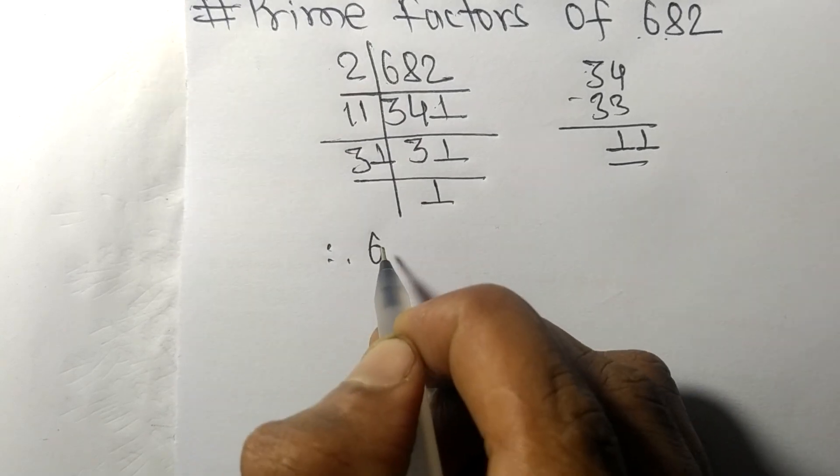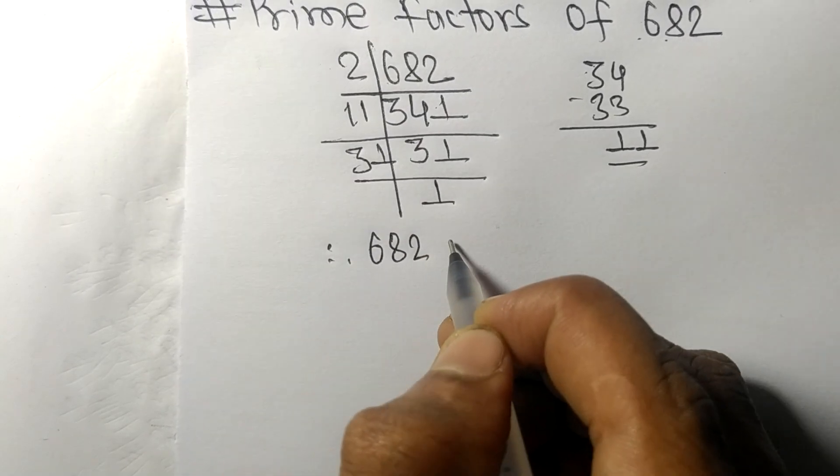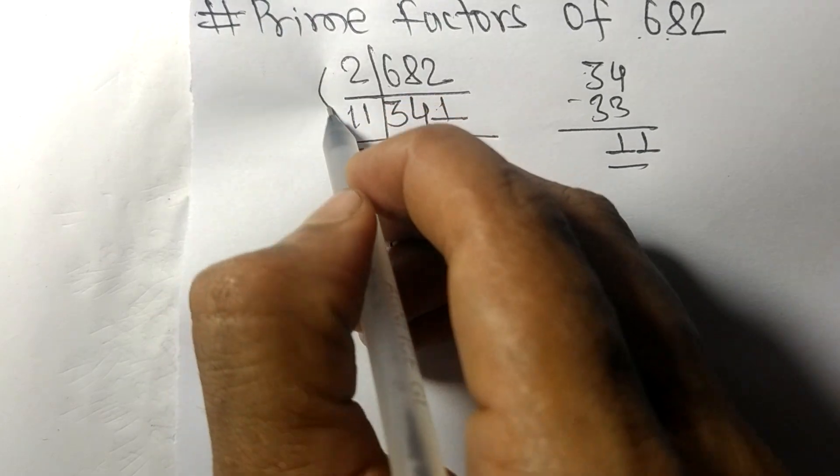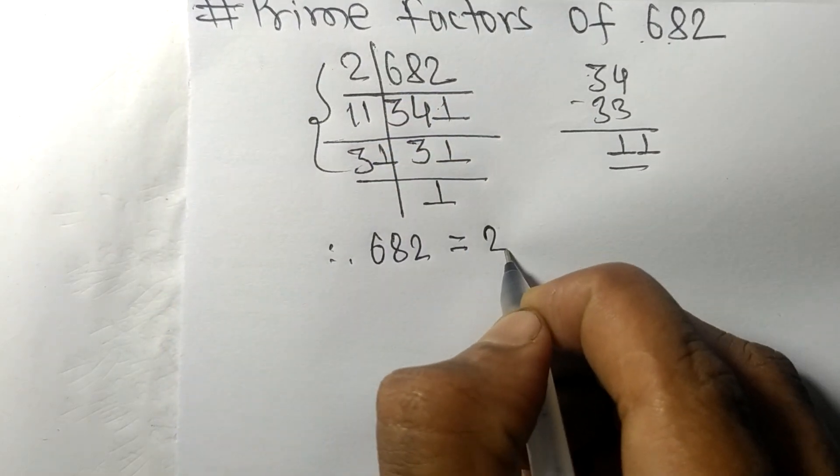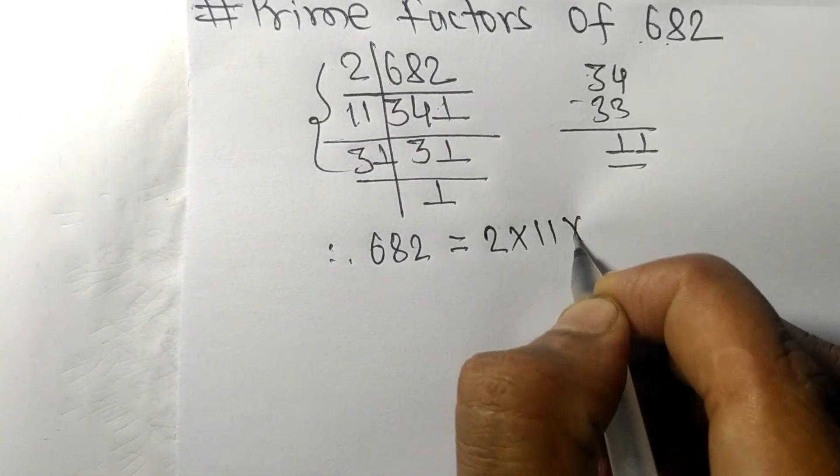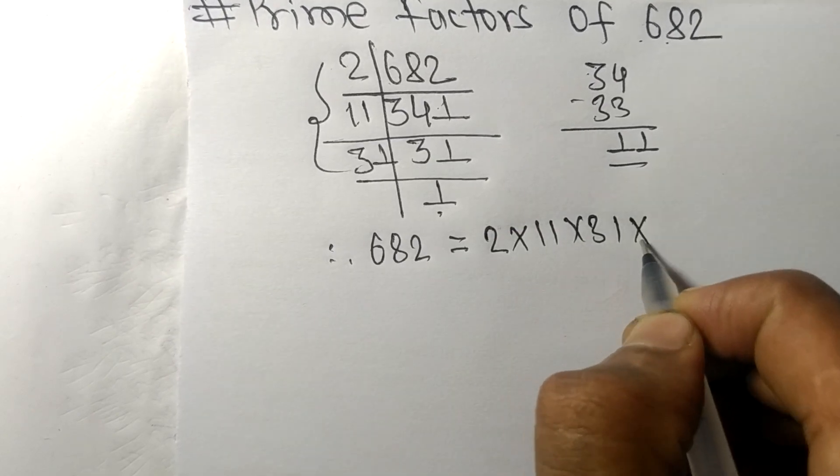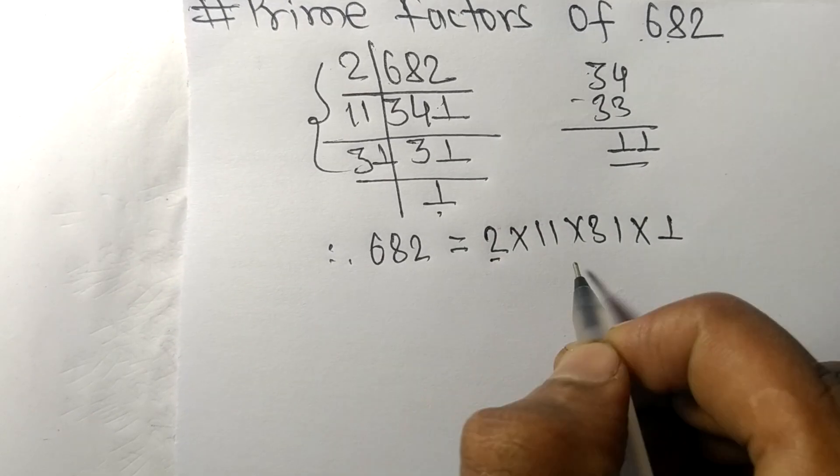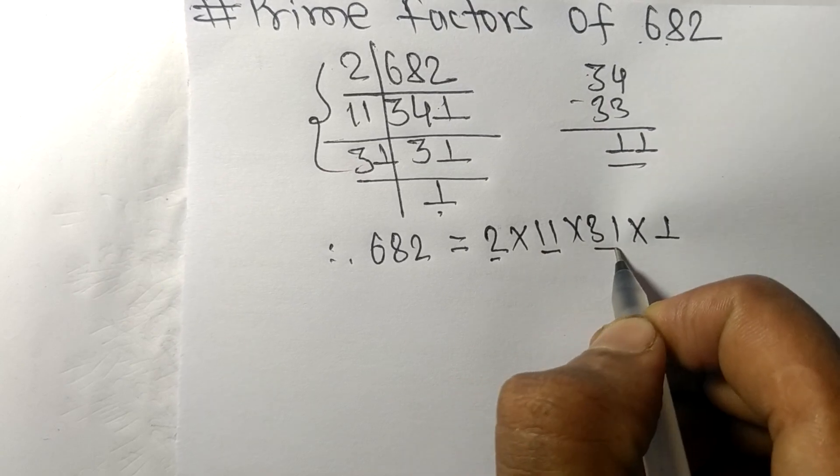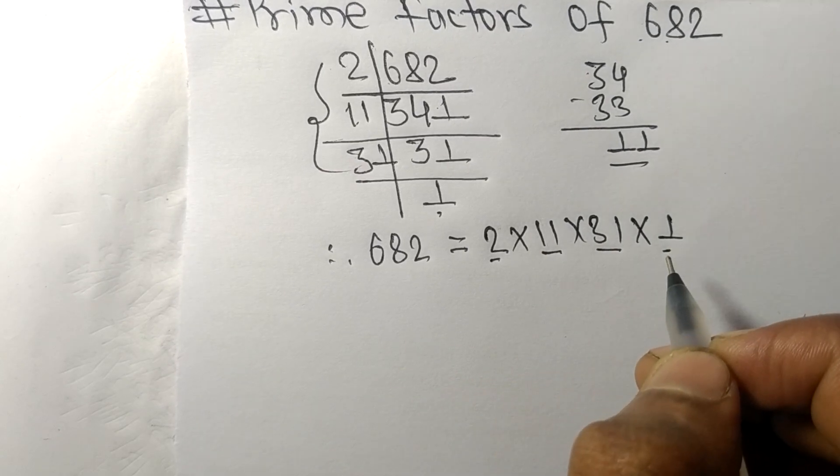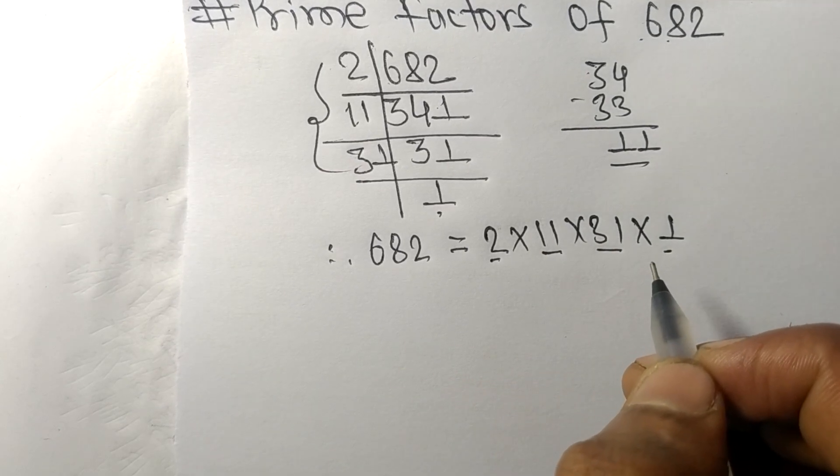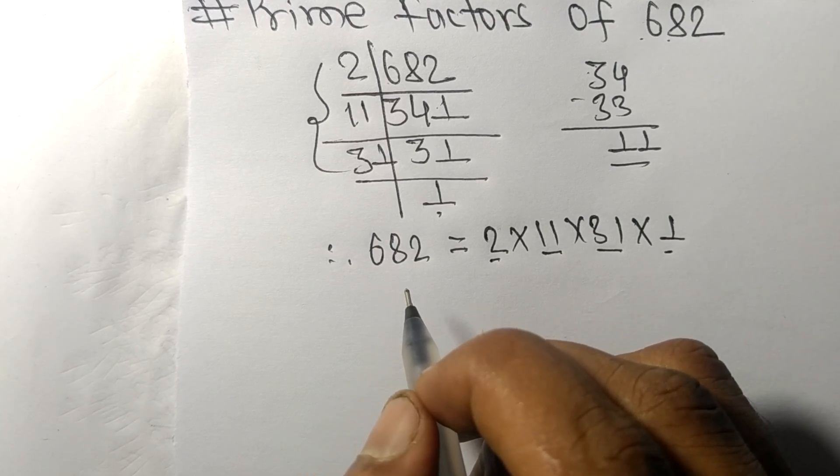Therefore, 682 is equal to, from here it is two times eleven times thirty-one, and from here it is one. So these two, eleven, thirty-one, and one are the prime factors of 682.